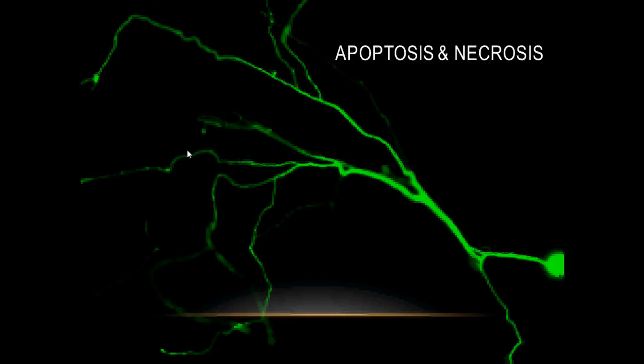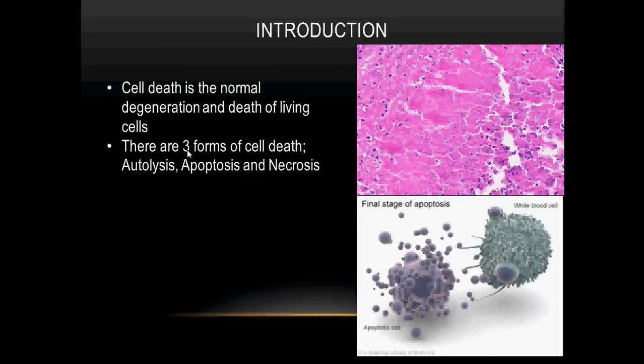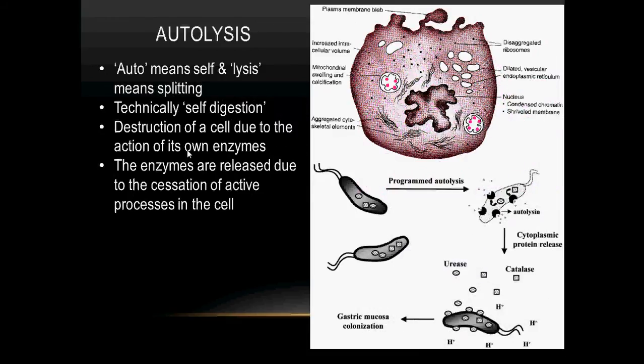Hey there guys, today we are going to look at two forms of cell death named apoptosis and necrosis. But before we go into apoptosis and necrosis, we are going to look at another form of cell death called autolysis. Before we proceed, let's look at the definition of cell death. Cell death is defined as the normal degeneration and death of living cells.